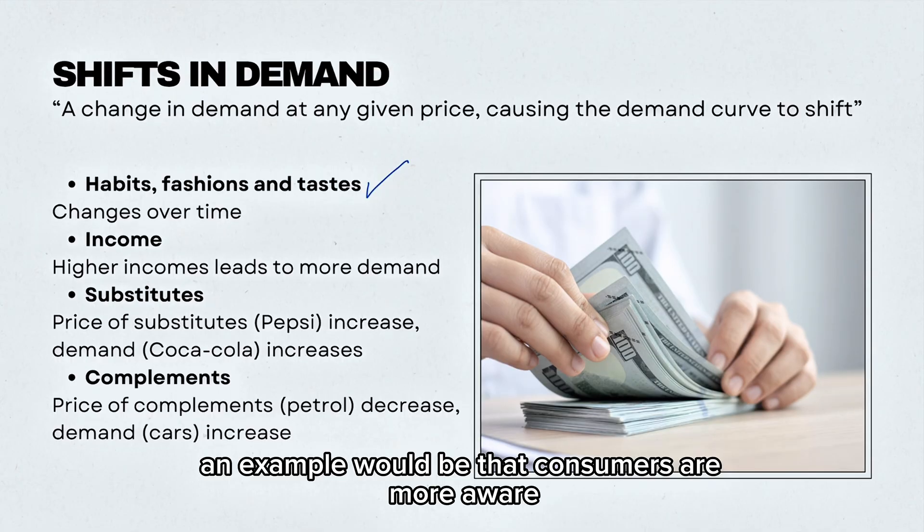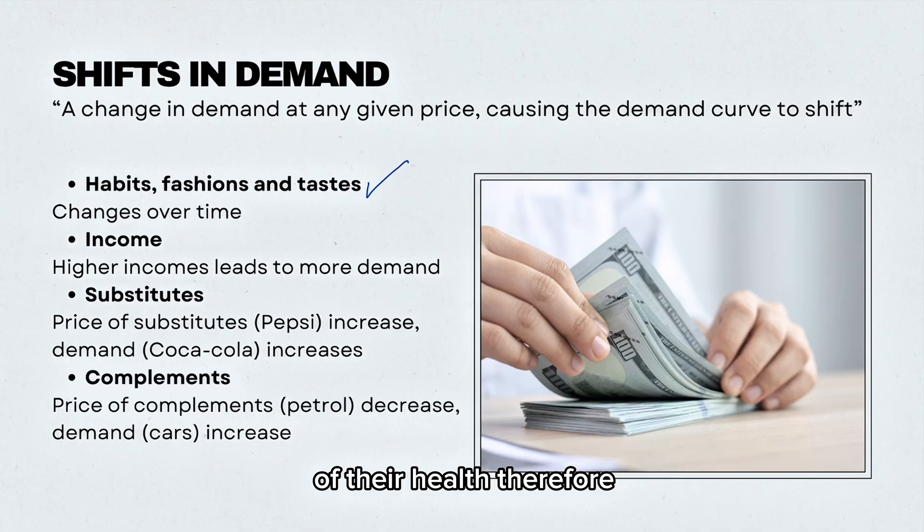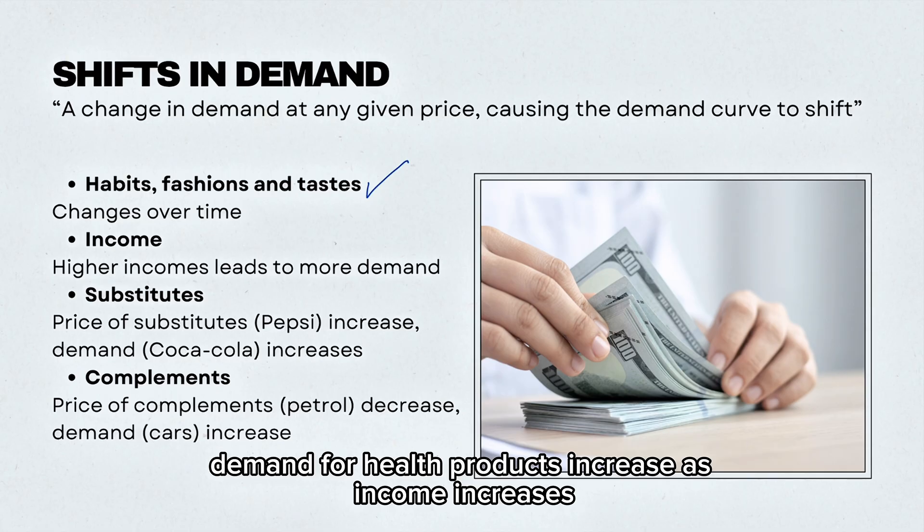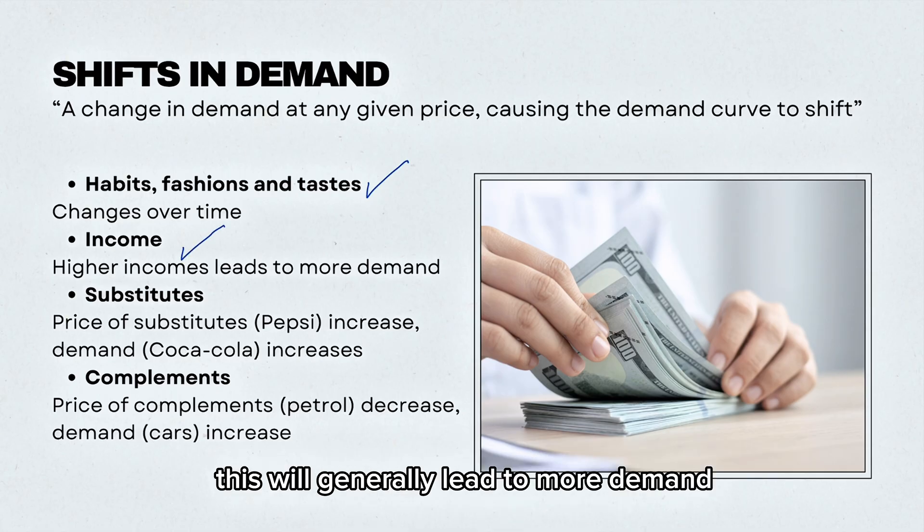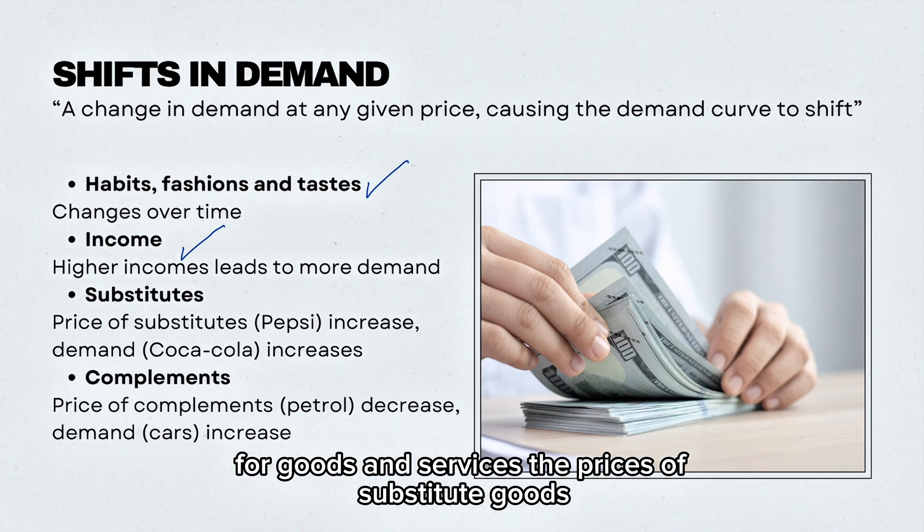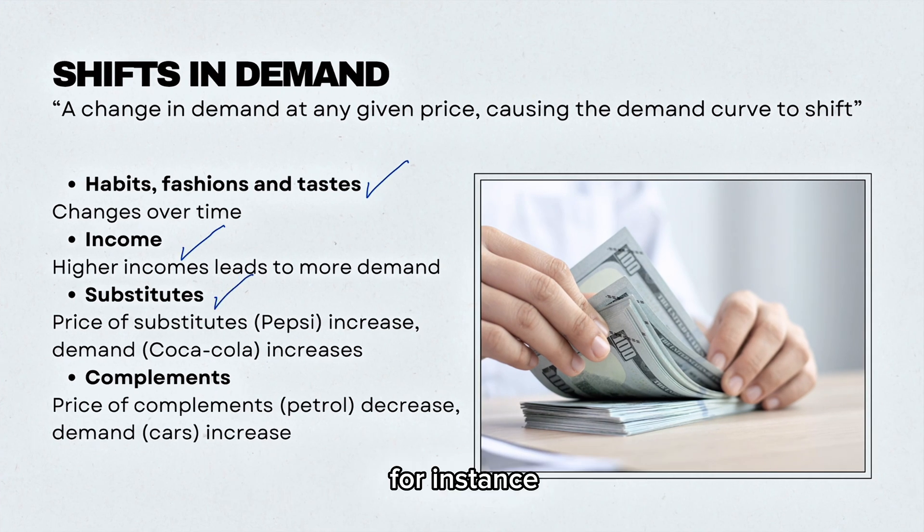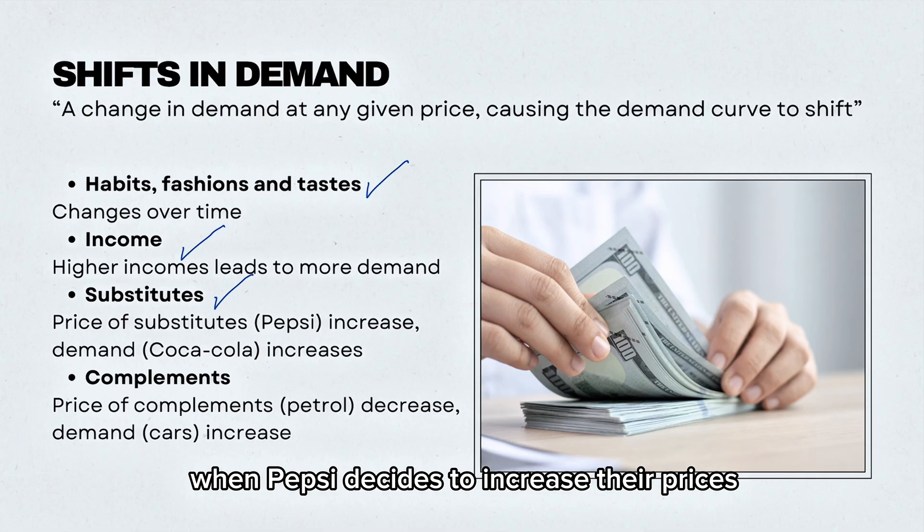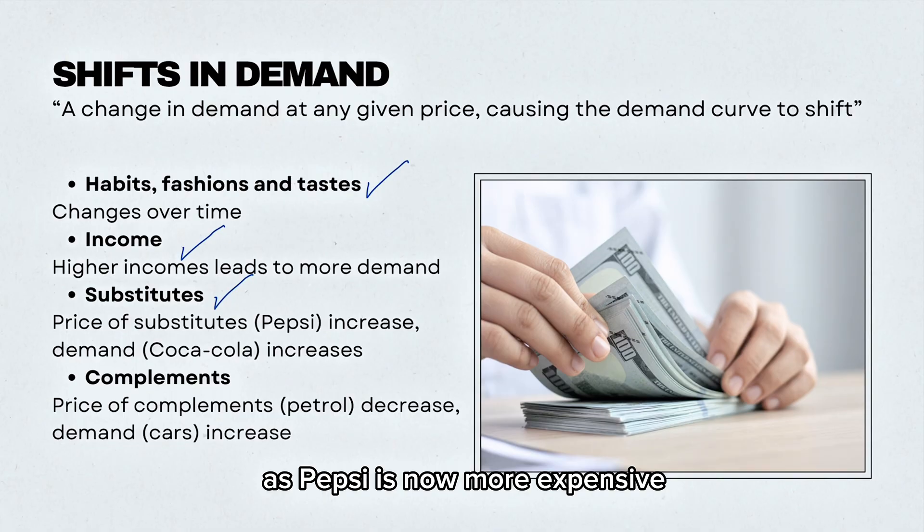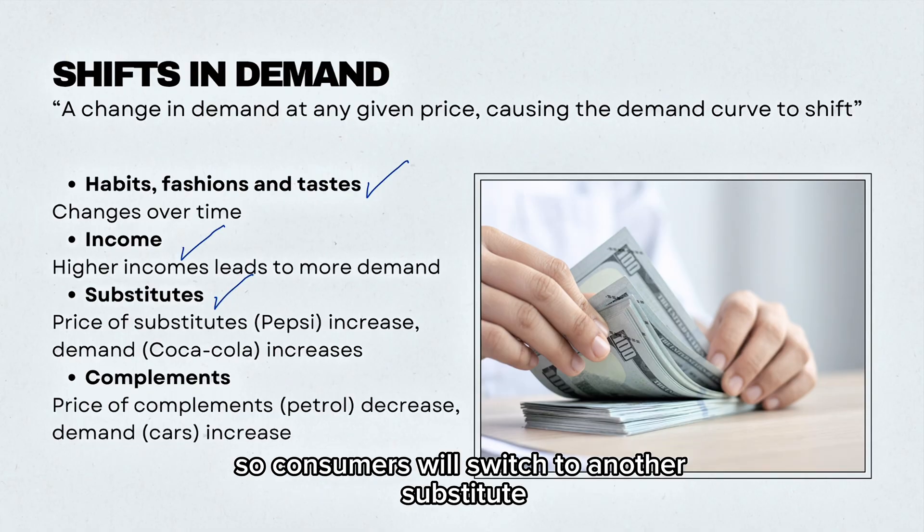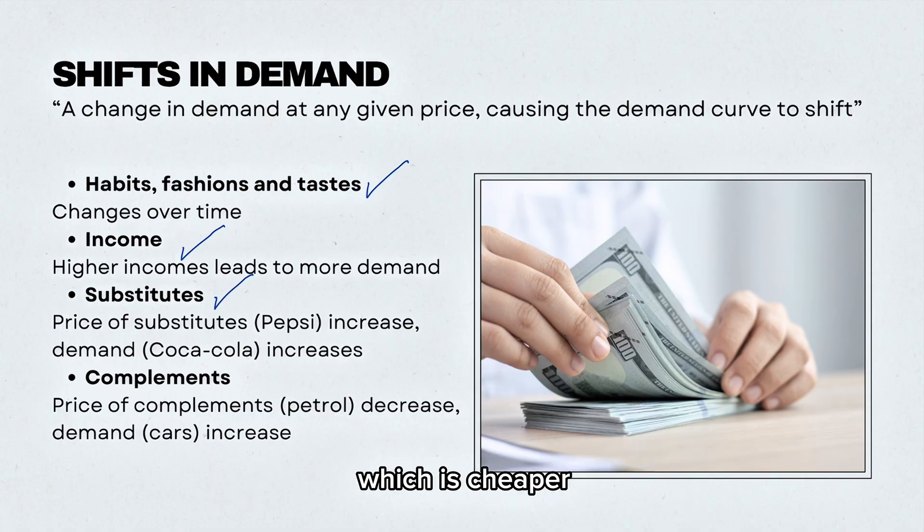An example would be that consumers are more aware of their health, therefore demand for health products increases. As income increases, this will generally lead to more demand for goods and services. The prices of substitute goods—for instance, when Pepsi decides to increase their prices, the demand for Coca-Cola increases as Pepsi is now more expensive. So consumers will switch to another substitute which is cheaper.